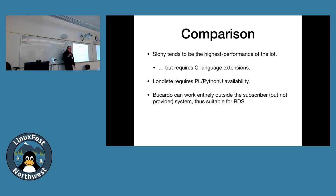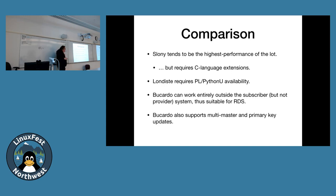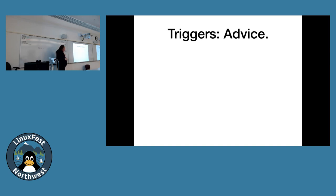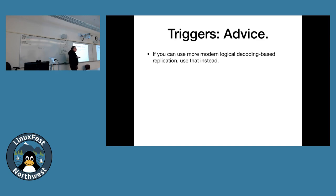Bucardo can work entirely inside the subscriber but not the provider system, so you can use it on RDS — we frequently use it this way, moving in and out of RDS. Bucardo also supports multi-master operation and primary key updates where you change the primary key of a row, which none of the others support. You should still use the newer approach if you can; trigger-based replication is still useful for major version upgrades from below 9.4, or in specialized environments where you don't have access to logical replication or the WAL stream.